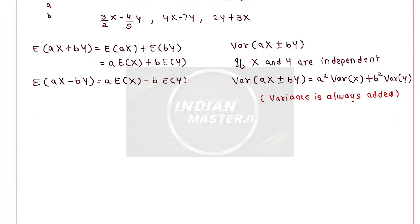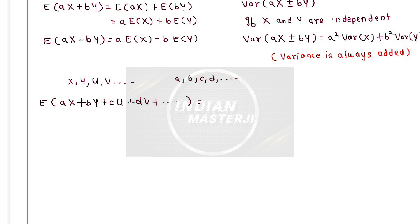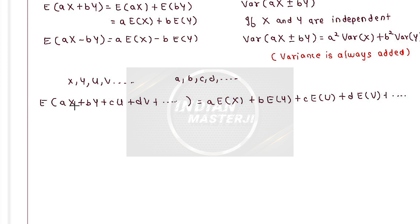Now here we took only two random variables x and y. Suppose there are more than two — suppose I have x, y, u, v and so on, with constants a, b, c, d and so on. Then if I have to find out the mean of a new random variable ax plus by plus cu plus dv and so on, the mean will be equal to a times mean of x plus b times mean of y plus c times mean of u plus d times mean of v and so on. You find the mean of each individual random variable and multiply it by the corresponding constant.